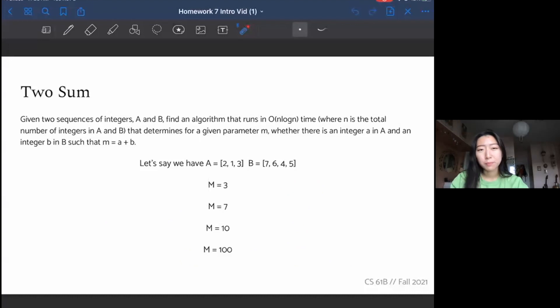So the last of these four sorting problems you can do is TwoSum. This one says, given two sequences of integers, or in other words, two arrays A and B, find an algorithm that runs an O(n log n) time, where n is the total number of integers in A and B, or the added total sum of number of elements that determines for a given parameter M, whether there is some number in A and some number in B such that M equals the sum of those two numbers. That might have sounded like a bunch of mumbo jumbo, but let's just look at an example. Let's say we're given the arrays A and B, where A is [2, 3, 1] and B is [7, 6, 4, 5]. Note that A and B don't have to be the same length.